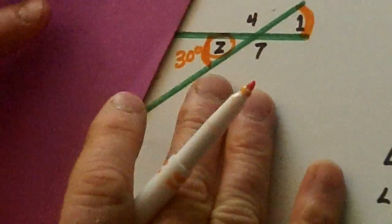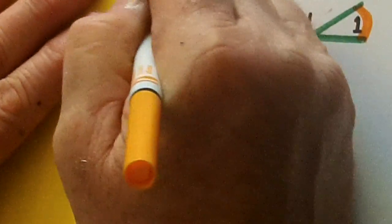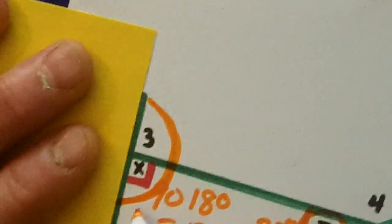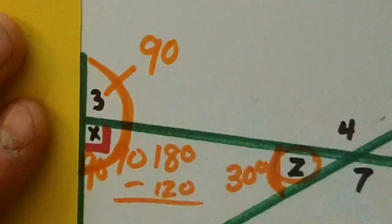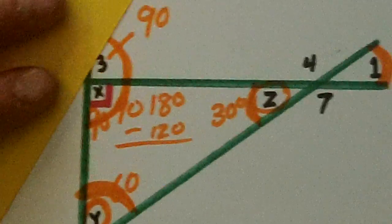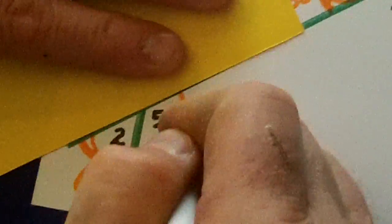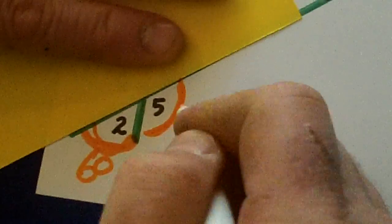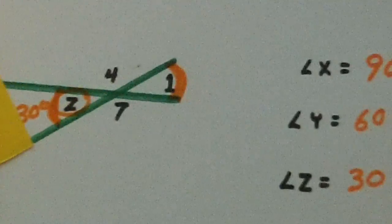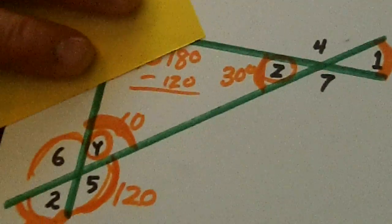Now what's supplementary right here? If X is 90, then three must also be 90 because they add up to 180. Now watch this. Two is 60. So five, which is supplementary here, must be 120. 120 and 60 is 180. Five is 120. Now six is vertical to 120. So six is 120.